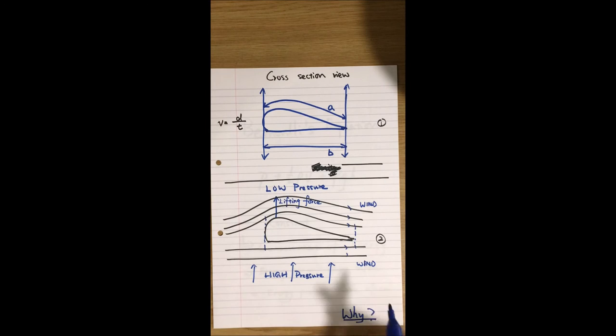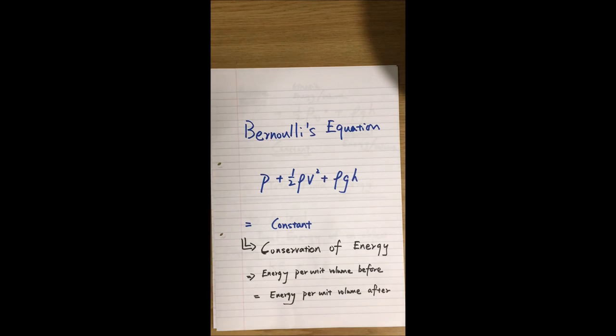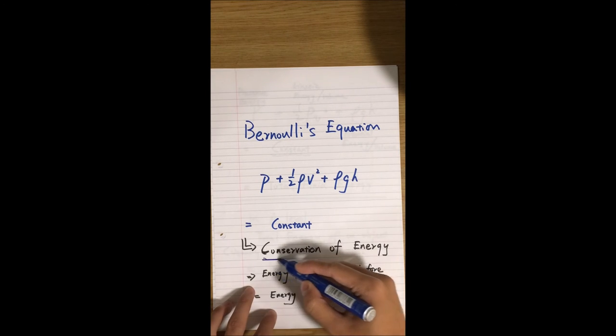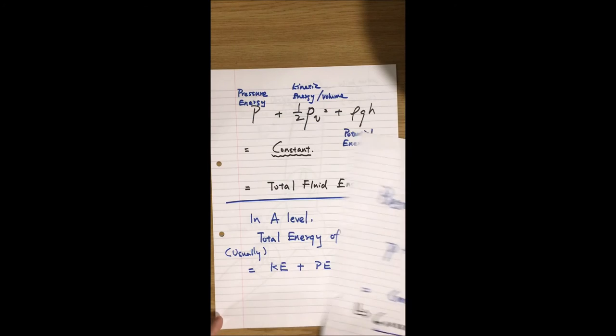But why? Why does higher velocity lead to lower pressure? The reason is because of Bernoulli's equation. It may look complicated, but in fact, it is an extension of conservation of energy principle. Let's look at it in detail.